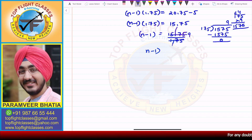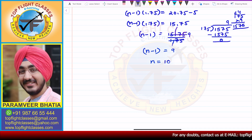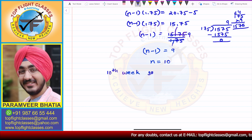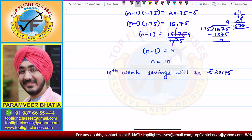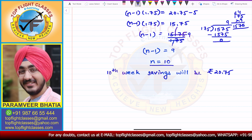So n comes out to be 10. In the 10th week, the savings will be Rs 20.75, and that is what is required in this question.